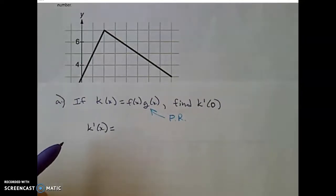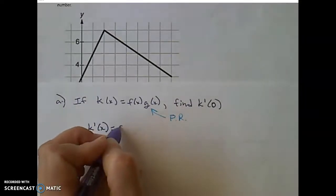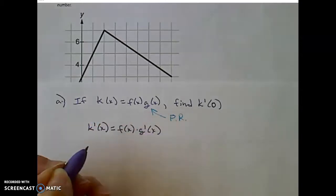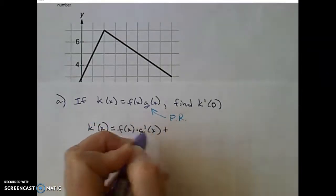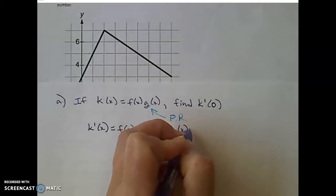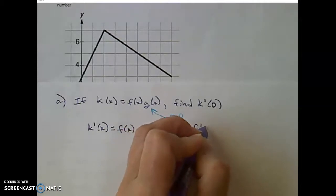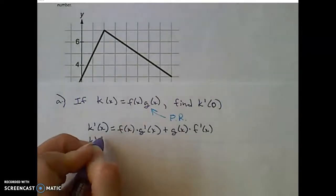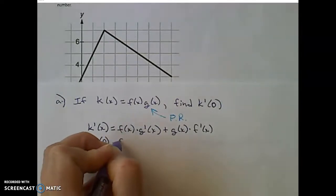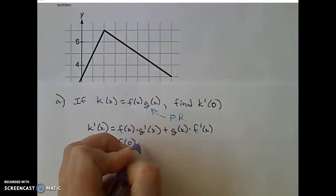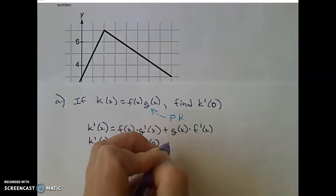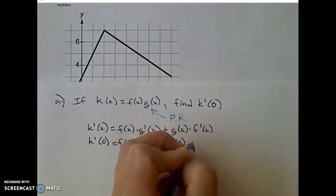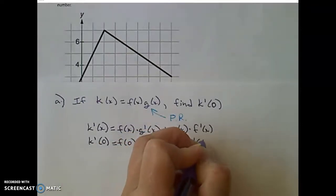What was the product rule? That was the first function times the derivative of the second, plus the second function times the derivative of the first. We're asked to find K prime of 0, so K prime of 0 will be F of 0 times G prime of 0 plus G of 0 times F prime of 0.